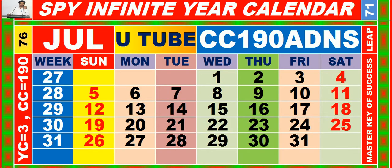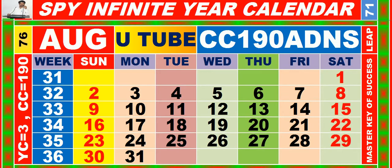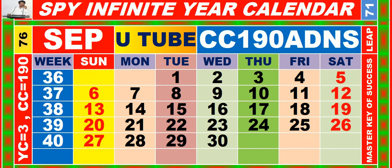Calendar for the month of July having calendar code equal to 190. Calendar for the month of August having calendar code equal to 190. Calendar for the month of September having calendar code equal to 190.